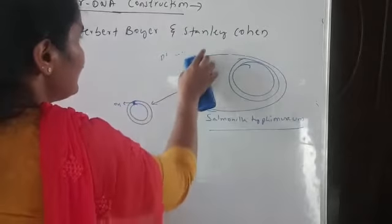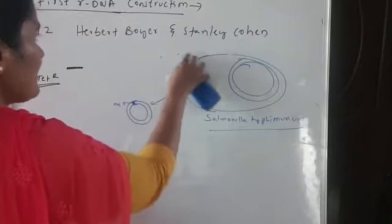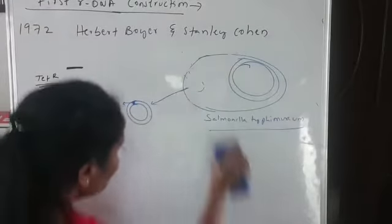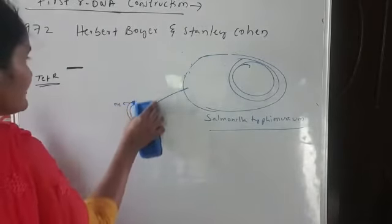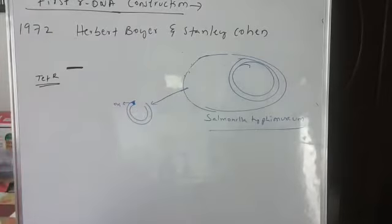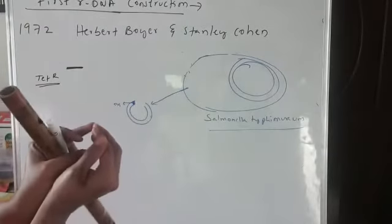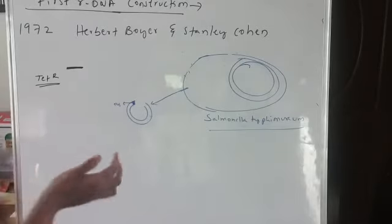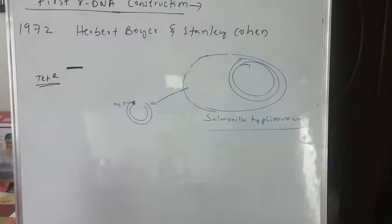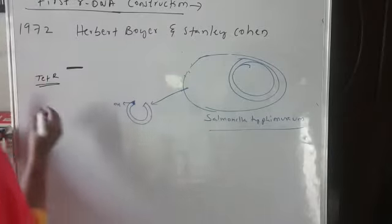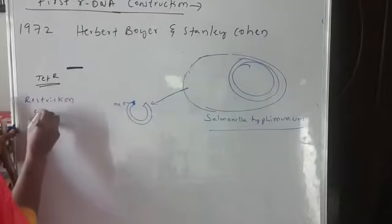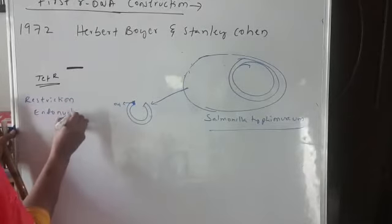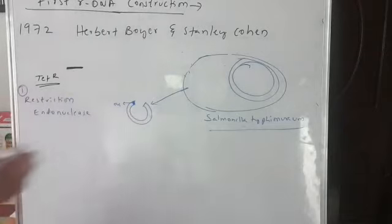After isolating the plasmid, they are cutting this plasmid by using an enzyme — restriction endonuclease. So the circular plasmid has now been cut, as you can see here. The enzyme they have used is restriction endonuclease to cut the plasmid.